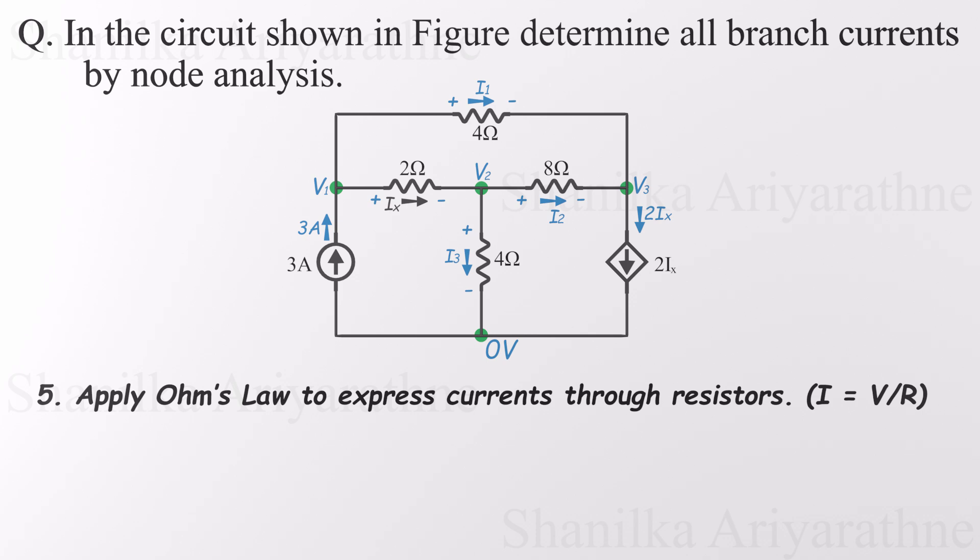In step 5, it's time to bring in Ohm's Law to express the currents through each resistor. Quick refresher: Ohm's Law tells us that current equals the voltage difference across a resistor, divided by its resistance. Let's apply that to each resistor in the circuit.